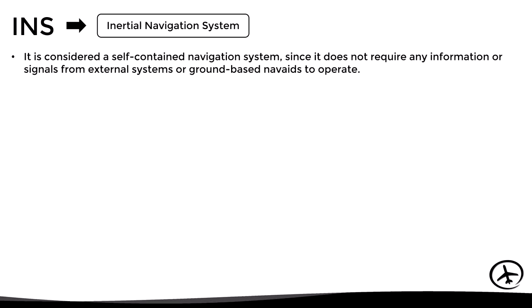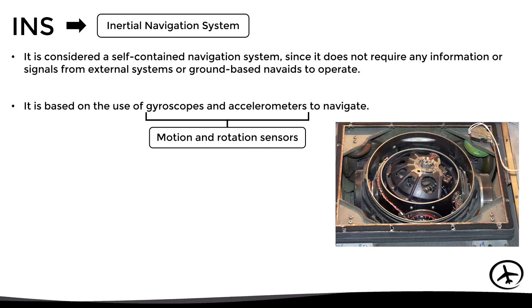Let's continue with the INS, which stands for Inertial Navigation System. It is considered a self-contained navigation system, since it does not require any information or signals from external systems or ground-based NAVAIDs to operate. It is based on the use of gyroscopes and accelerometers, which act as motion and rotation sensors. The system measures the acceleration and rotation of the aircraft in each of the axes, and based on that information it calculates data such as heading, distance traveled, and speed. Starting from a known initial position where the INS is aligned, and knowing the parameters of speed, heading, and elapsed time, the system can accurately estimate the position of the aircraft as it flies. The estimated position is calculated in terms of geographic coordinates, so an updated AIRAC is also necessary. It is important to bear in mind that INS accuracy reduces over time due to the accumulation of measurement errors from the sensors.